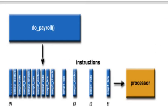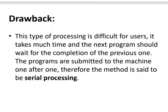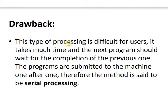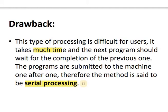This type of processing is difficult for users. It takes much time, and the next program must wait for the completion of the previous one. Programs are submitted to the machine one after another. Therefore, this method is said to be serial processing — tasks execute one after another, which is why it is called serial processing.